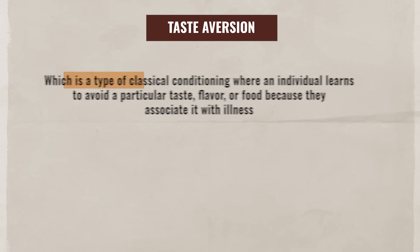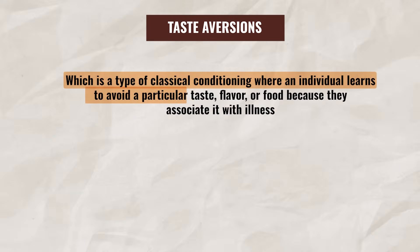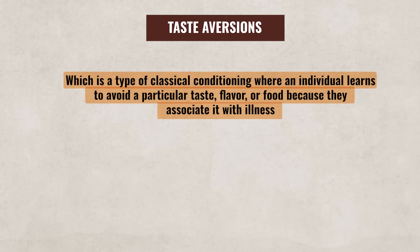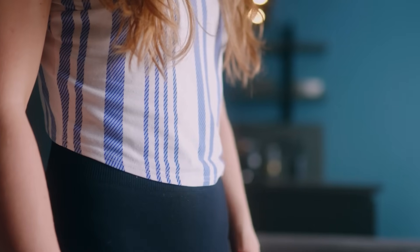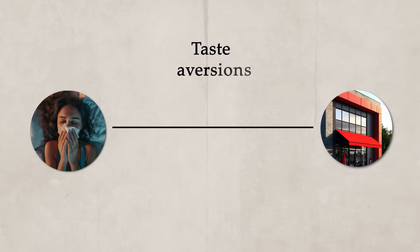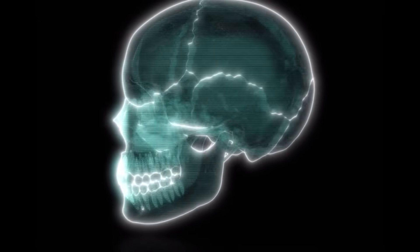Another way classical conditioning impacts individuals is through taste aversions, which is a type of classical conditioning where an individual learns to avoid particular tastes, flavors, or food because they associate it with illness. For instance, let's say you and your friends went out to eat at a new restaurant. You have a great time, but later that night you end up getting sick. You probably are going to associate sickness with that restaurant and will be hesitant to go back. Notice it only took one negative experience to form that association. Taste aversion only requires one pairing of food and sickness to form a strong association — this is referred to as one trial learning.